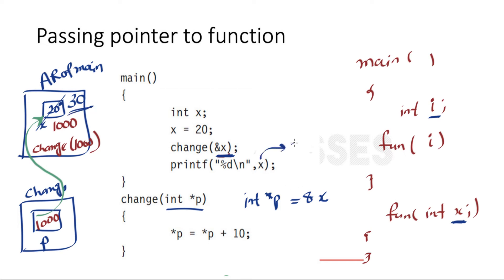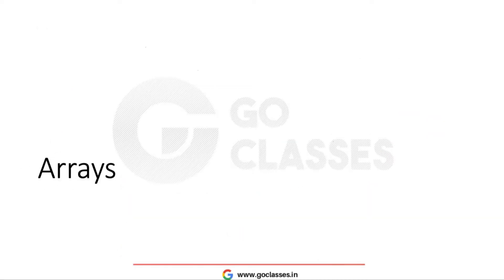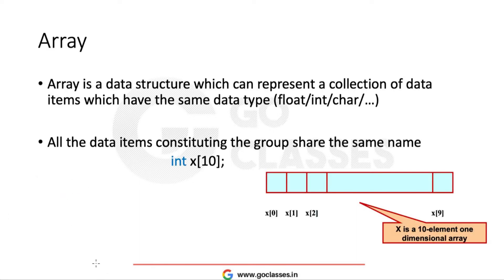Let's start with arrays. We will see arrays and their relationship with pointers. Suppose you declare one array such as int x[10]. In memory, you have 10 blocks of integer reserved for you, from x[0] to x[9]. This is a representation of an array in memory. Arrays are a data structure which can represent a collection of data items of the same data type.